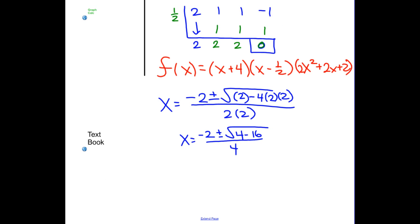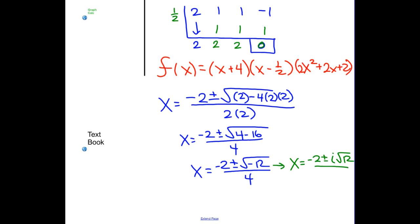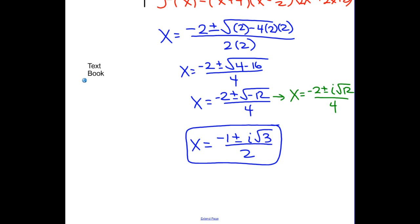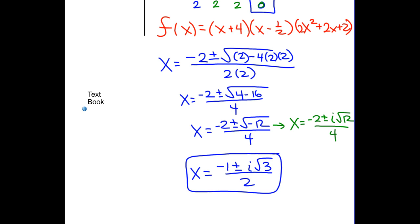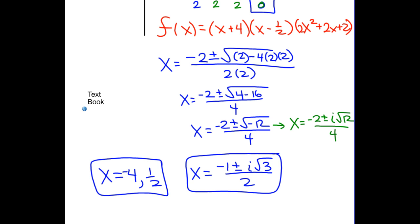We can see right now we can't have a negative under the radical. So x equals negative 2 plus or minus the square root of negative 12, all over 4. We change this to x equals negative 2 plus or minus i times the square root of 12, over 4. When we simplify, we get x equals negative 1 plus or minus i·(√3)/2.